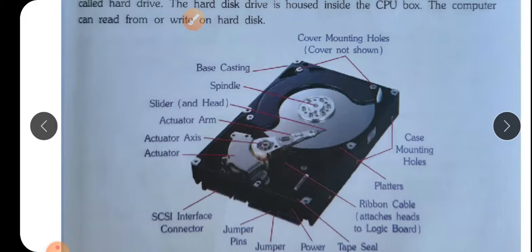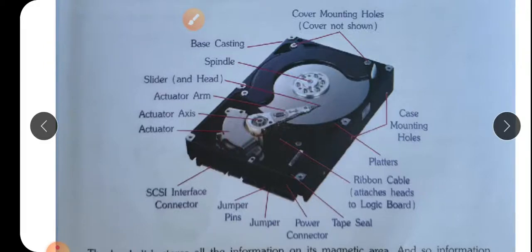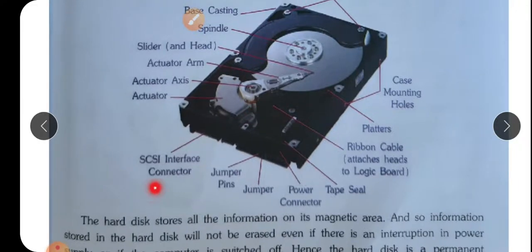Base coat, casting, spindle, slider, actuator arm, actuator axis, SCSI interface connector, jumper pins, jumper, power connector, tape seal, ribbon cables, platters, case mounting holes. Now each and everything functions differently. These all will come in the hardware section.